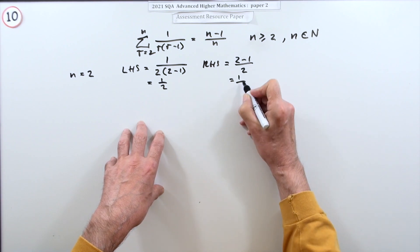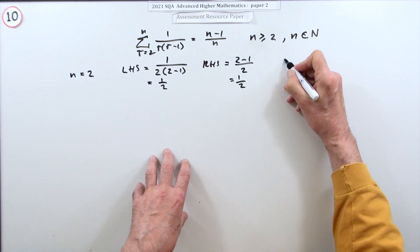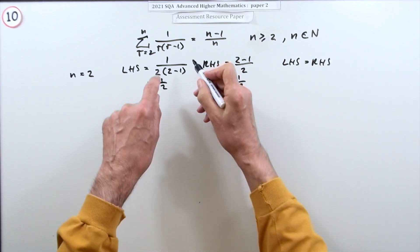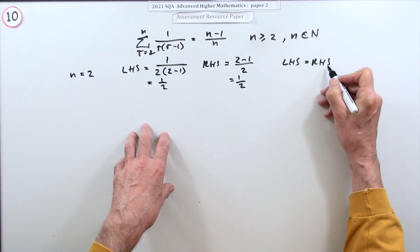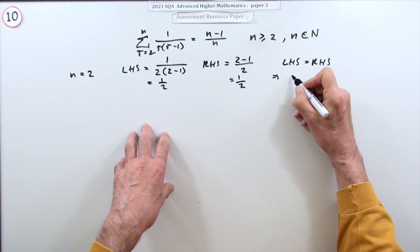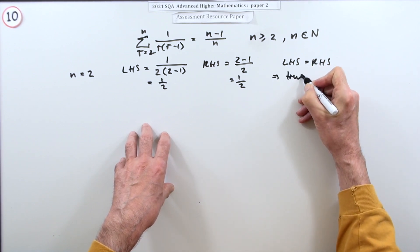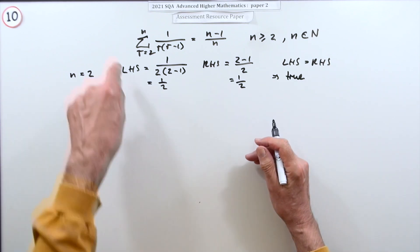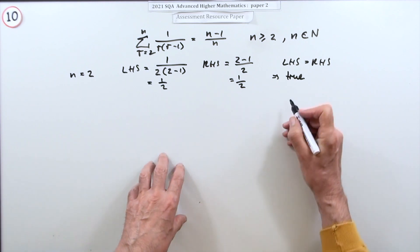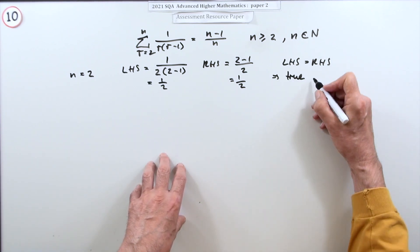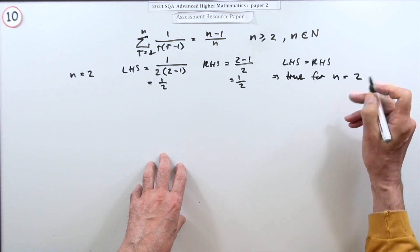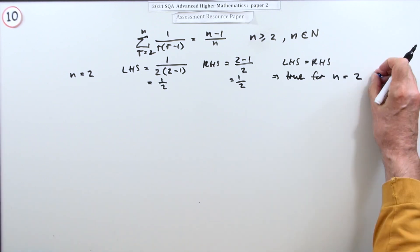And the right hand side has got two minus one over two, which is still one over two. So now you can say the left hand side is the same as the right hand side, which means it's true. Sometimes you can call that the proposition and then refer to it by name. The proposition is true for n equals two. You need to have that - it's got to be true to start with.